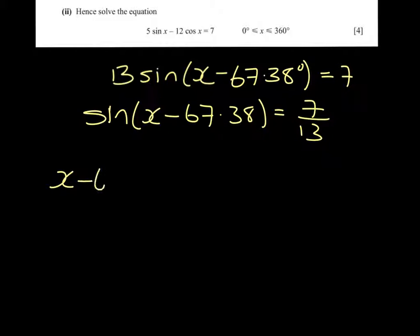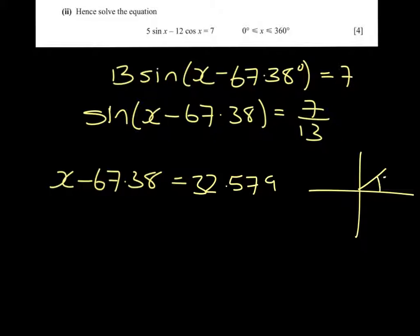So x minus 67.38 equals 32.579. Now if I draw that on a CAST diagram, I also get the answer 147.421.